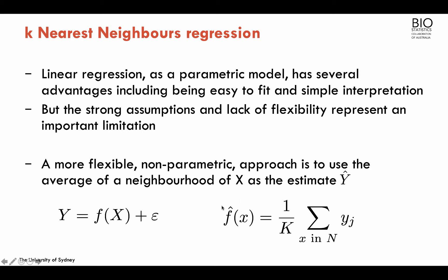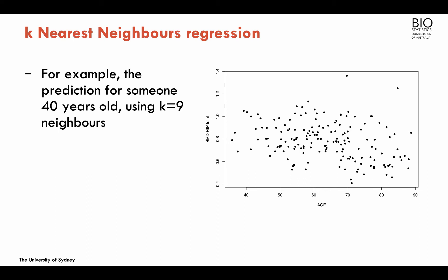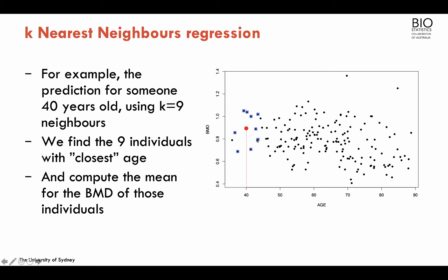The estimation of the functional form is going to be based on an average of observed outcome values. Suppose we are back in our example where I'm interested in predicting bone mineral density with the variable age. I have 169 individuals plotted with a certain age and a certain BMD. Suppose we want to predict the BMD for someone who's 40 years old using nine neighbors — I'll choose the nine closest values around age 40.